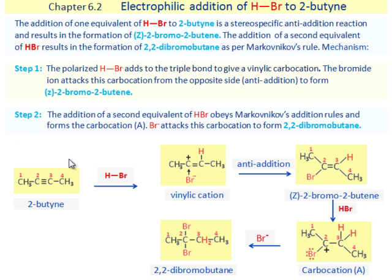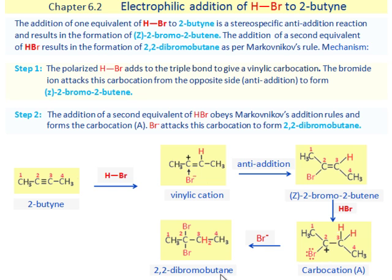Step 2. The addition of a second equivalent of HBr obeys Markovnikov's addition rules and forms carbocation A. Bromide ion attacks this carbocation to form 2,2-dibromobutane.